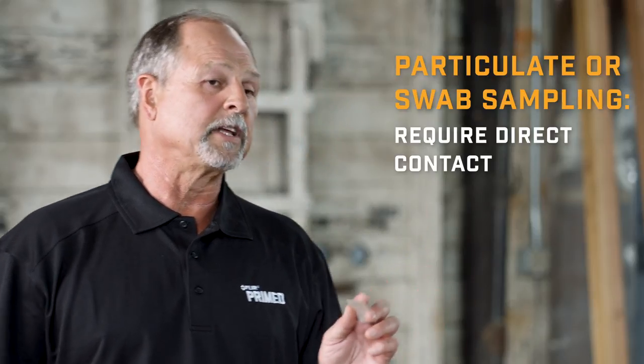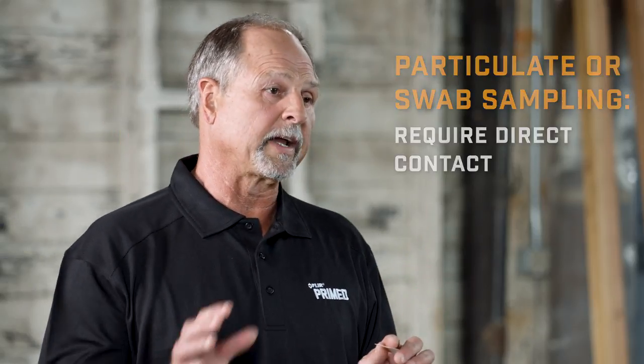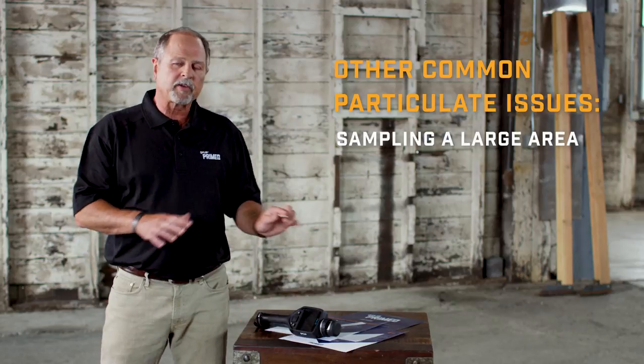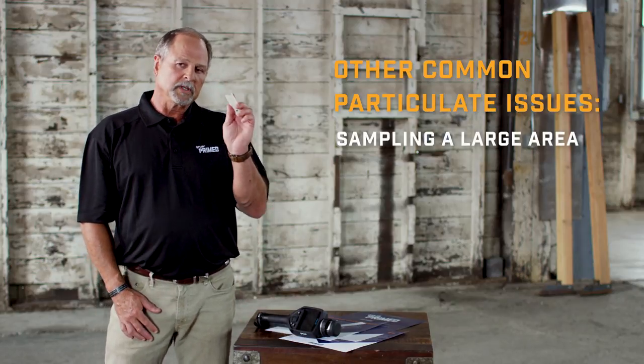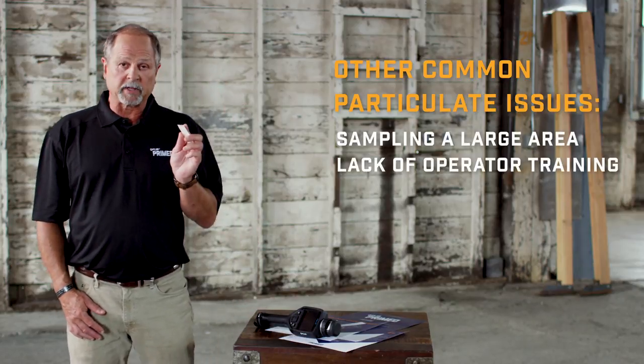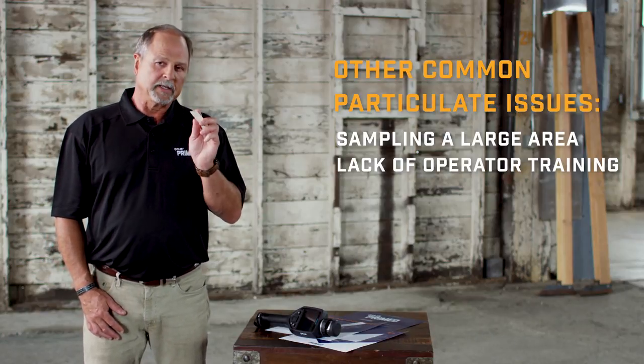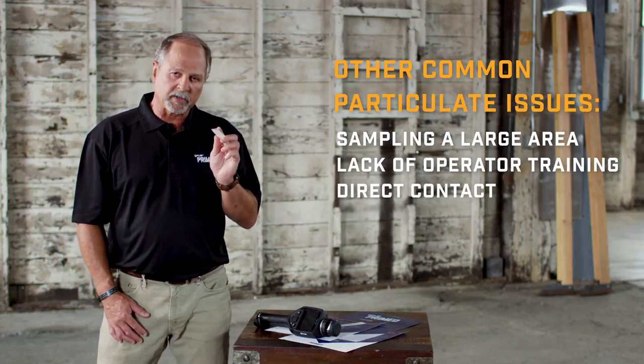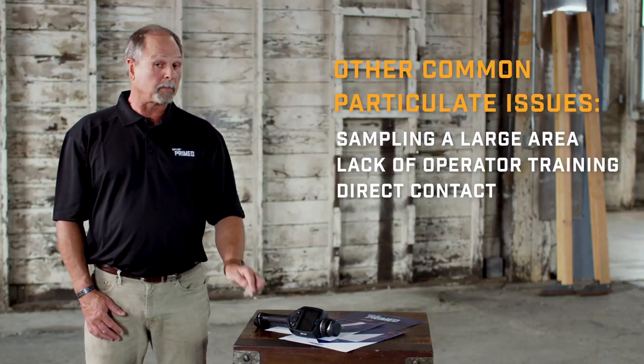With swab sampling, it does require some direct contact, but it's not as influenced by environmental conditions like vapor sampling. However, you need to take the swab, which is fairly small, and sample a small area. If you have a large area to sample, there are issues with operator training that can affect the quality of your sample. One key concern is that direct contact, when looking at a scene with explosives, can be problematic if you're dealing with a touch-sensitive explosive — so you have to get closer, compared to the standoff distance you can have with a vapor sampler.